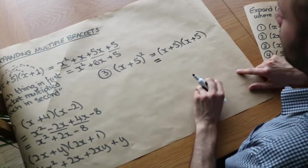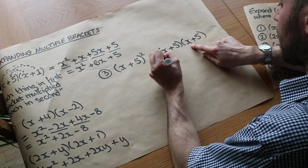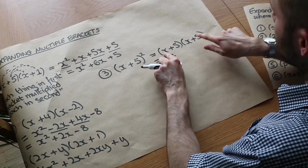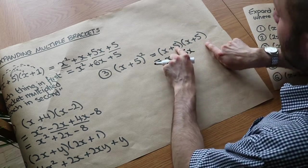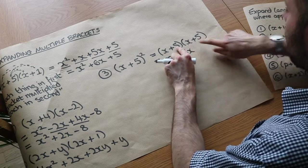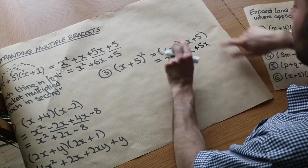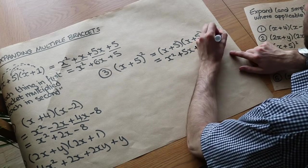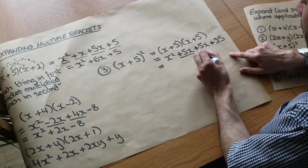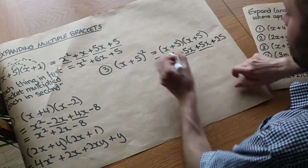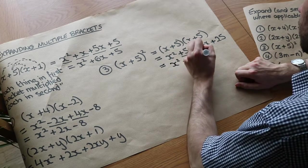Then we do exactly what we did before. x times x is x squared. x times 5 is 5x. Then the second term: 5 times x is another 5x. And 5 times 5 is plus 25. Collecting like terms, the two 5x terms give 10x. So we get x squared plus 10x plus 25.